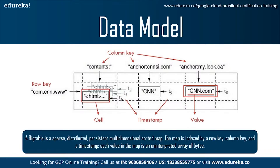As one concrete example that drove some design decisions — suppose we want to keep a copy of a large collection of web pages and related information that could be used by many different projects. Let us call this particular table the Webtable. In Webtable, we would use URLs as row keys, various aspects of web pages as column names, and store the contents of the web pages in the contents column under the timestamps when they were fetched. In this figure, you can see a slice of an example table that stores web pages. The row name is a reversed URL. The contents column family contains the page contents, and the anchor column family contains the text of any anchors that reference the page. CNN's home page is referenced by both the Sports Illustrated and the MyLook home pages, so the row contains columns named anchor:cnnsi.com and anchor:my.look.cm. Each anchor cell has one version. The contents column has three versions at timestamps T3, T5, and T6.